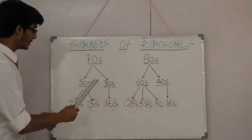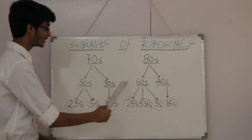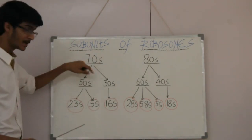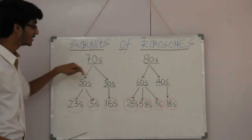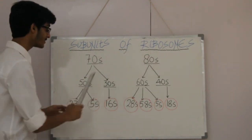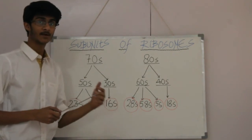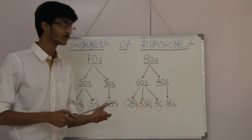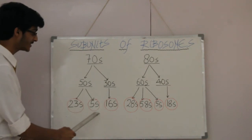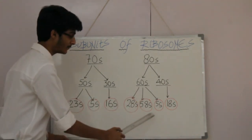Now we will memorize the various subunits of 50S, 30S, 60S and 40S. 50S is bigger between 50 and 30, and 60S is bigger between 60 and 40. Therefore the bigger subunits will have more components. The 50S has 23S and 5S, and the 60S has 28S, 5.8S and 5S.